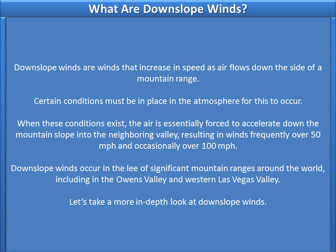Downslope winds are winds that increase in speed as air flows down the side of a mountain range. Certain conditions must be in place in the atmosphere for this to occur. When these conditions exist, the air is essentially forced to accelerate down the mountain slope into the neighboring valley, resulting in winds frequently over 50 mph and occasionally over 100 mph.